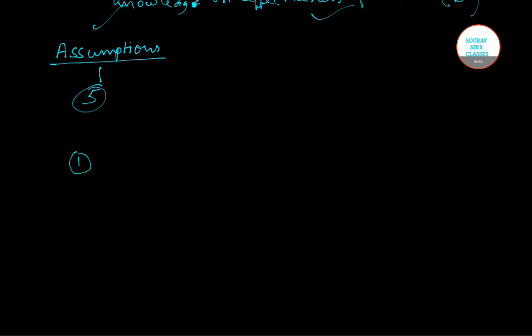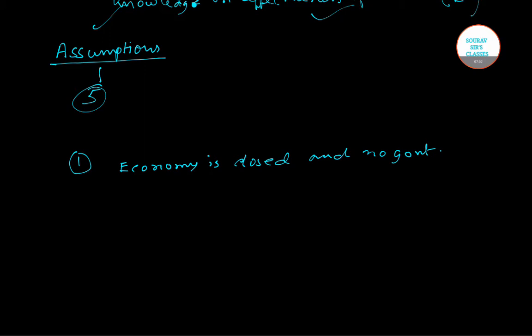Assumption number one: the economy is closed and there is no government sector. Therefore, in equilibrium, saving is equal to investment — that is, S equals I.